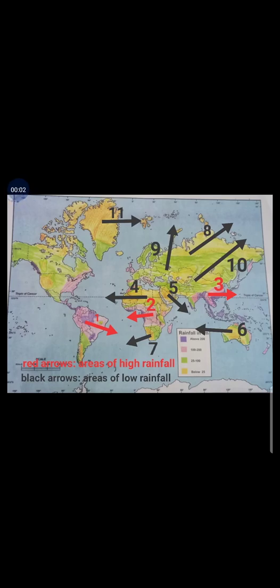Hello everyone, I hope you all are good. Today in this video we are going to learn about the uneven distribution of rainfall in the world. We have already started in class that at some places the rainfall is very high, like above 200 centimeters, and at some places the rainfall is very low.